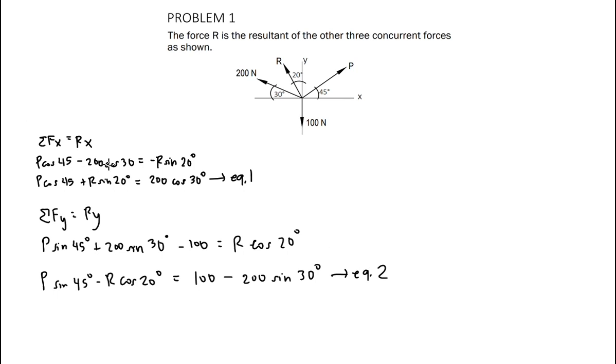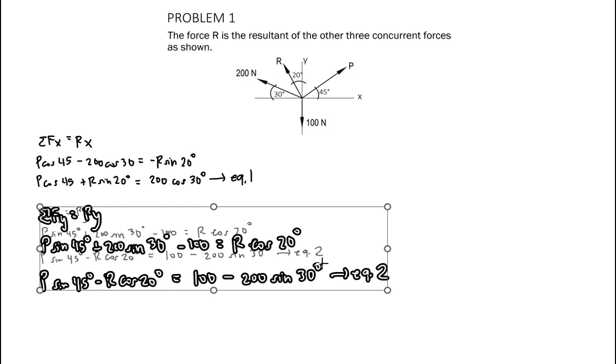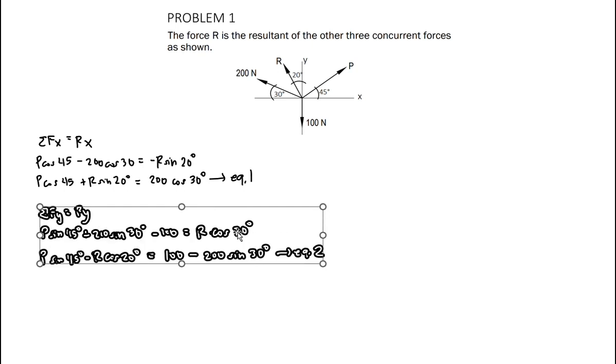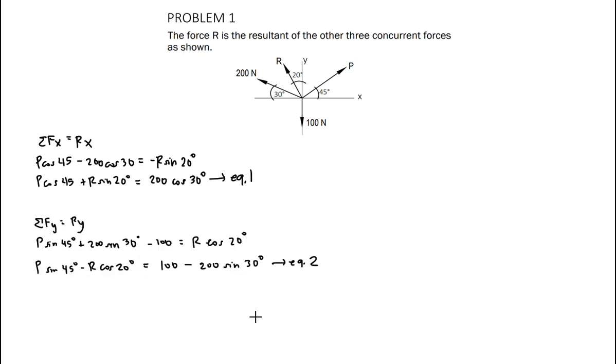Now we have two equations with two unknowns. We can solve for these variables using our calculator by going to mode 5, 1.